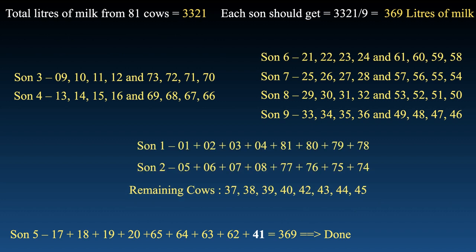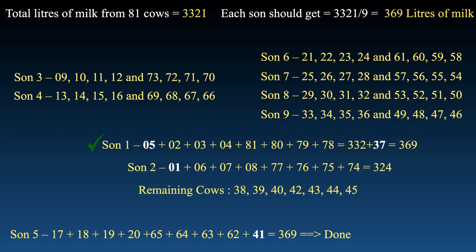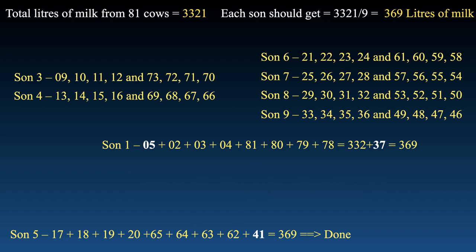Consider the remaining sons in pairs: sons 1 and 2, sons 3 and 4, sons 6 and 7, sons 8 and 9. For sons 1 and 2: give cow 37 to son 1 — he is now four short. Swap a pair of cows between the two sons with a difference of four — so they swap their first cows. After the swap, son 1 reaches 369. Son 2 now needs to cover both the 41 he was short and the four he gave to son 1, so the only option is cow 45. This pair is sorted.